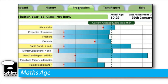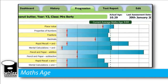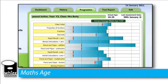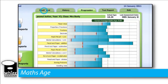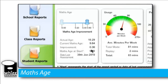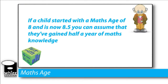Meaning that if a student started off with a maths age of 8 and is now 8.5 — or let's have a look at peanut butter here in fact — he had a maths age of 9.28 when he started and he's now got a maths age of 9.64. You can say with a fair degree of confidence that that child's maths has improved by a certain amount. If a child started with a maths age of 8 and is now 8.5, you can safely assume they've gained about half a year of maths knowledge.